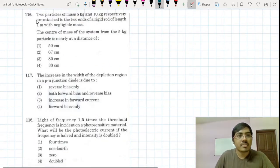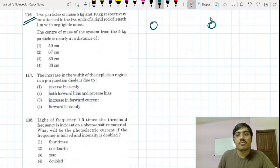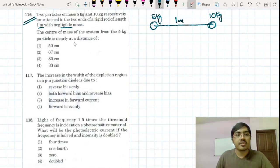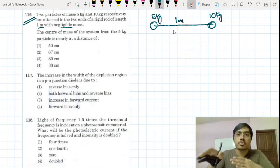Question number 116 is from the topic of center of mass. You have two bodies over here, one of them has the mass of 10 kilogram and the other one has a mass of 5 kilogram. They are separated by a distance of one meter, and this rod is having a negligible mass. The center of mass of the system from 5 kilogram particle is nearly at a distance of what?